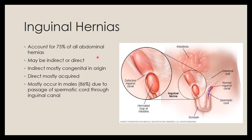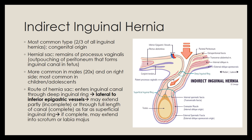Inguinal hernias constitute around 75% of all abdominal hernias, occurring in the inguinal canal. They can be direct or indirect. Indirect inguinal hernias are usually congenital, occurring due to a persistent patent processus vaginalis. Direct inguinal hernias are usually acquired. Around 86% of inguinal hernias occur in males because the spermatic cord passes through the inguinal canal. The processus vaginalis is an outpouching of peritoneum that forms the inguinal canal in the fetus; if it remains patent in adults, it can lead to indirect inguinal hernia formation.